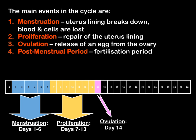The menstrual cycle has four main events. The first, lasting days 1 to 6, is the menstruation period, where the uterus lining breaks down and blood and cells are lost. The second stage, days 7 to 13, is the proliferation stage, where the uterus lining is repaired. Then on day 14, ovulation occurs — the release of the egg from the ovary. The remaining time, days 15 to 28, is the post-menstrual period, during which fertilisation can occur and the uterus lining is maintained.